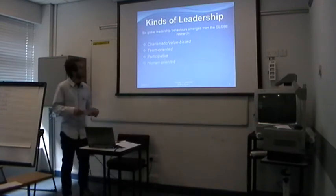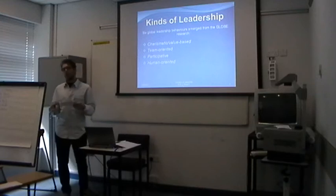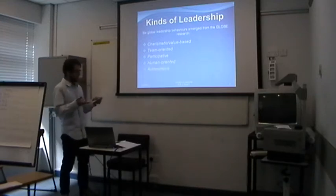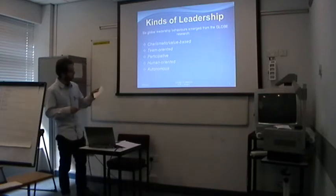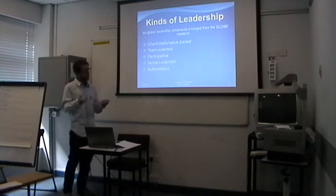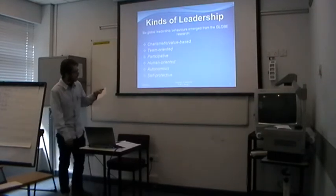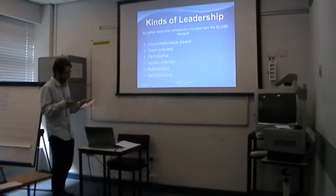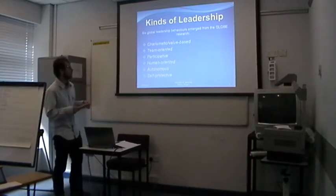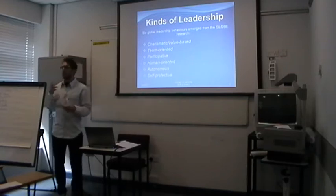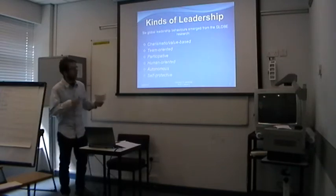The third, participative leadership, describes a leader who is non-autocratic and who involves others in making decisions. Human-oriented leadership includes modesty and sensitivity to other team members. Autonomous refers to independent and individualistic leadership. And self-protective reflects the behaviors that ensure the safety and security of the leader and of the group.